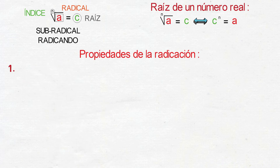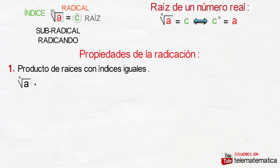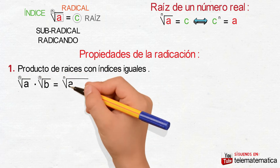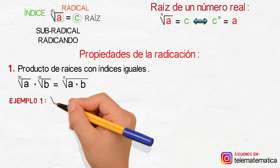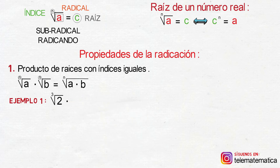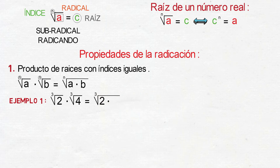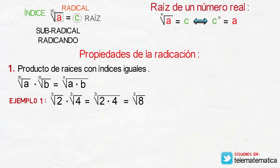En primer lugar, producto de raíces con índices iguales: se define como raíz enésima de A multiplicada por la raíz enésima de B, va a ser igual a conservar el índice N y multiplicar los subradicales. Veamos un ejemplo: raíz cúbica de 2 multiplicada por la raíz cúbica de 4. Aplicando la propiedad, la raíz cúbica de 2 multiplicada por 4. Resolviendo el producto, esto sería igual a la raíz cúbica de 8 y, aplicando la raíz de un número real, esto nos quedaría 2.